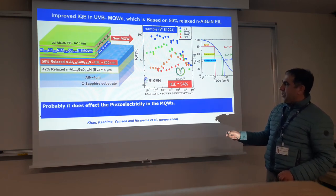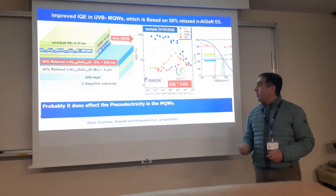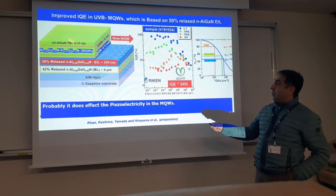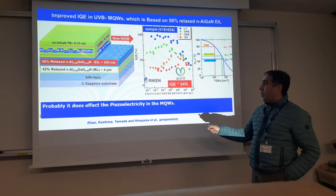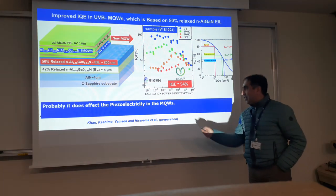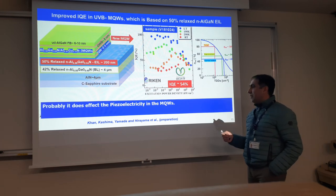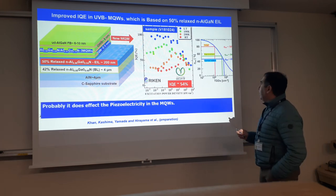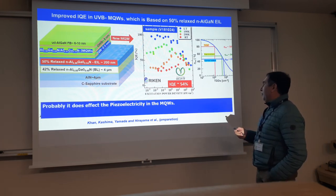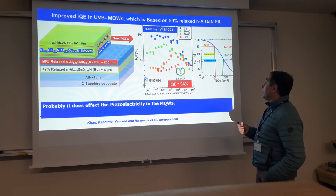This is the buffer layer at 4 microns and the 20-nanometer electron injection layer. Finally, we made a three quantum well structure on the top. With this new structure, we got an IQE of 54%, which was the highest value ever achieved at RIKEN as far as I know.